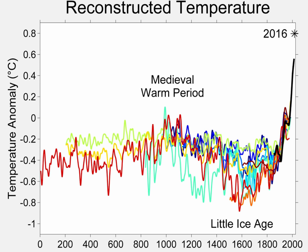Vinikov and Grody found 0.20 degrees Celsius per decade between 1978 and 2005, since which the dataset has not been updated.